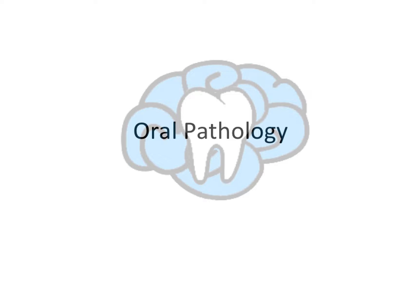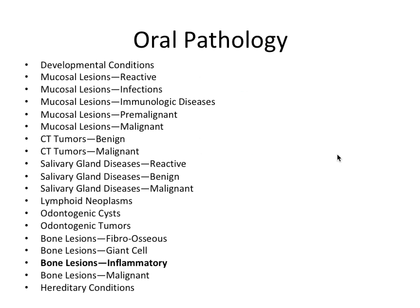Hey guys, it's Ryan here with another oral pathology video, and this time we're going to talk about inflammatory bone lesions. Inflammation of bone and bone marrow is common in the jaws in the form of osteomyelitis. Most lesions are an extension of either periodontal or periapical inflammation — thinking about both endodontics and periodontics — while others can be associated with jaw trauma or infection.